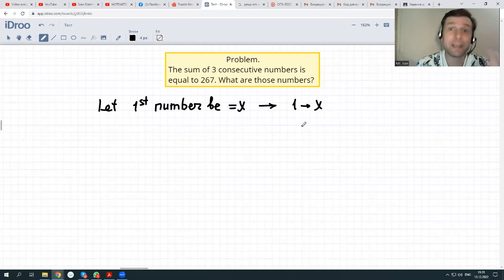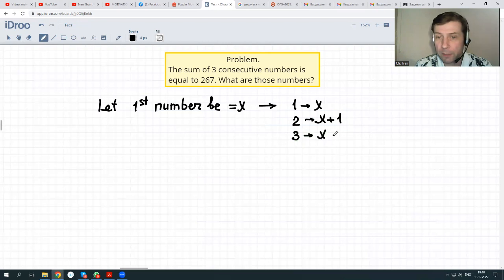Second number since they are consecutive. Consecutive means they are going one after another. 1, 2, 3, or 11, 12, 13, or 27, 28, 29, so forth. Means each next number is one unit greater than the previous one. So, second would be x plus 1, and third would be x plus 2. Here they are: x, x plus 1, and x plus 2.